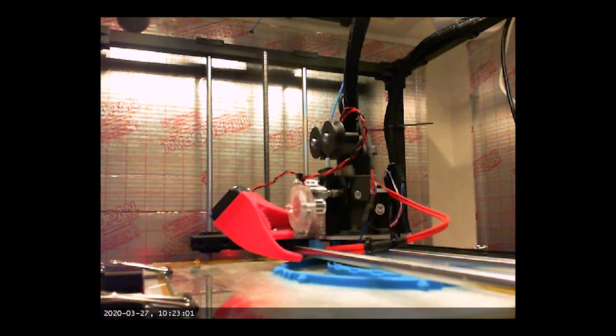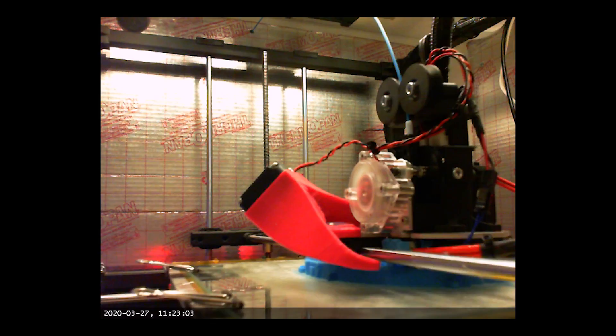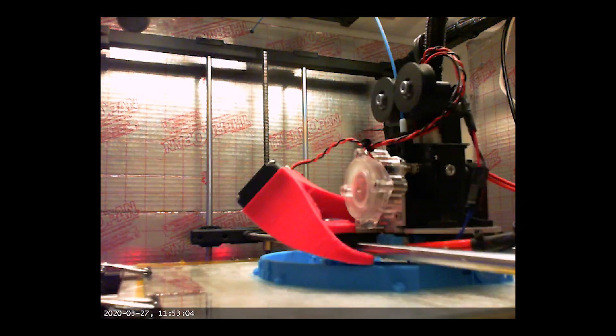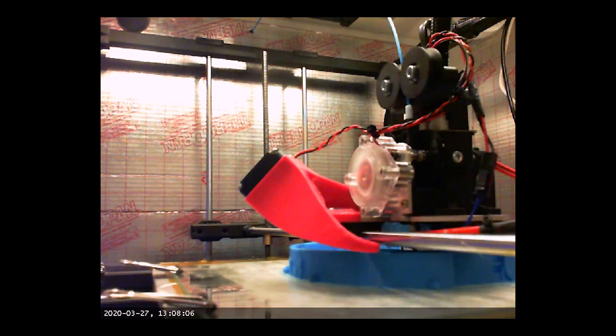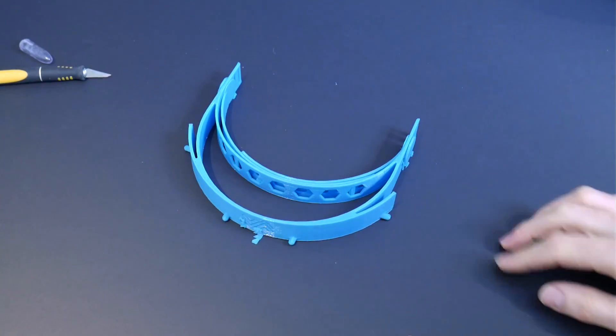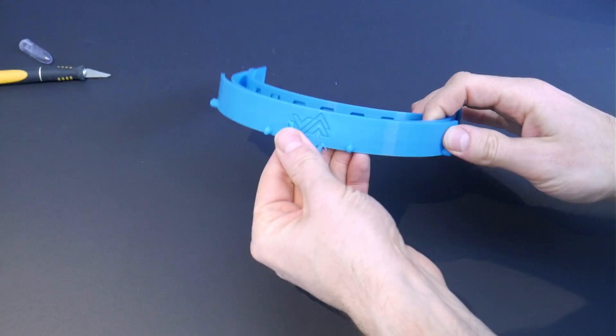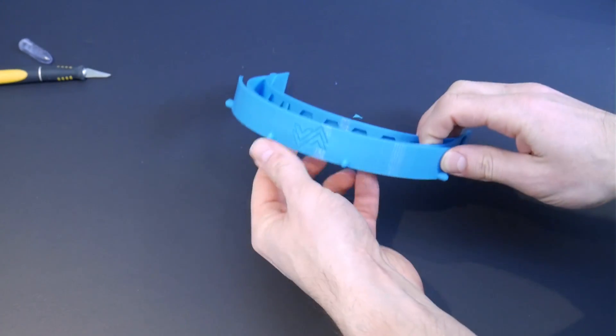...allow you to print those complete overhangs without any sort of support, so you won't need any support inside of that model there. That'll make a nice clean print. Afterwards you can just break those single layers free very easily by hand post-printing. There is very little cleanup to be done. You can actually pick off most of the support, if not all of it, by hand as you see I'm doing here.